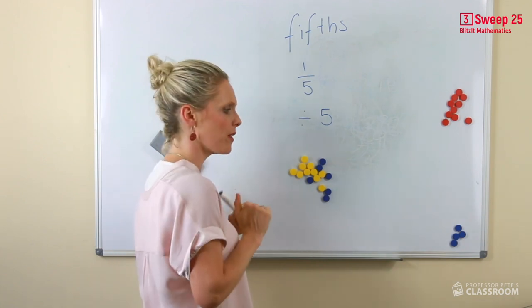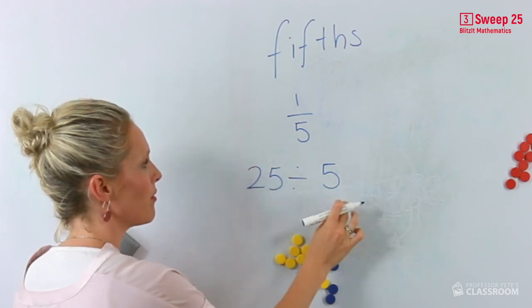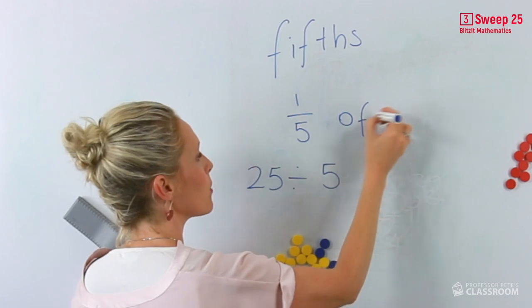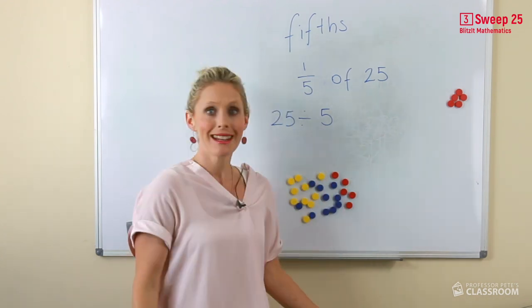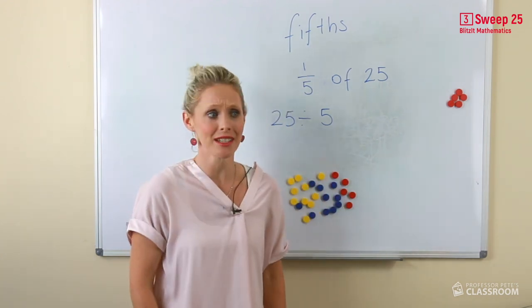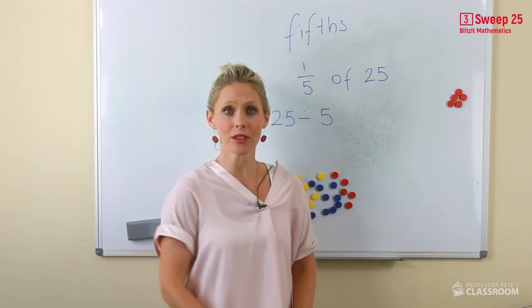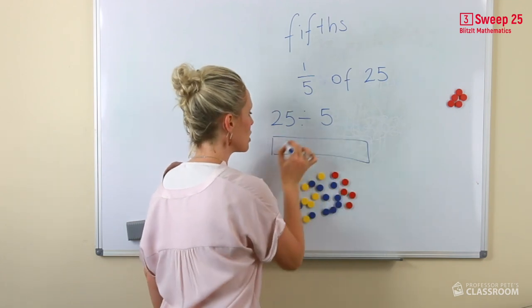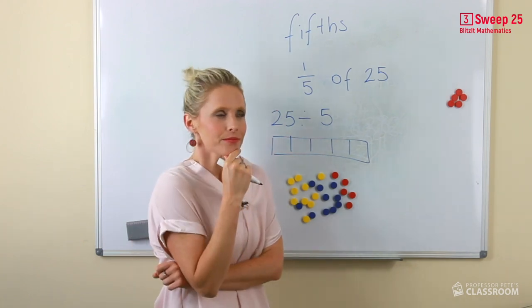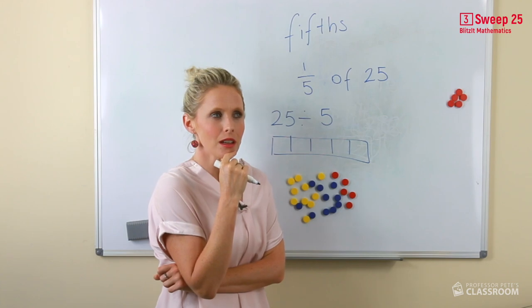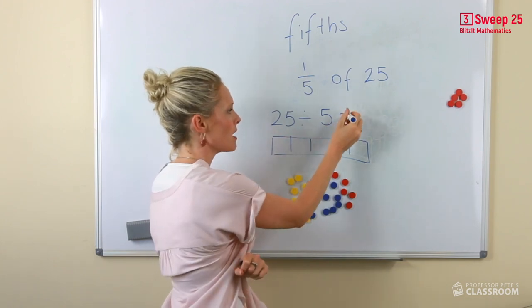What would one-fifth be? So it would be 25 divided by 5 or one-fifth of 25. Now, here we have 25 counters, but it's going to take us forever to divide them into five groups. So what is the known number fact? 5 times what equals 25? Or 25 divided by 5 equals?